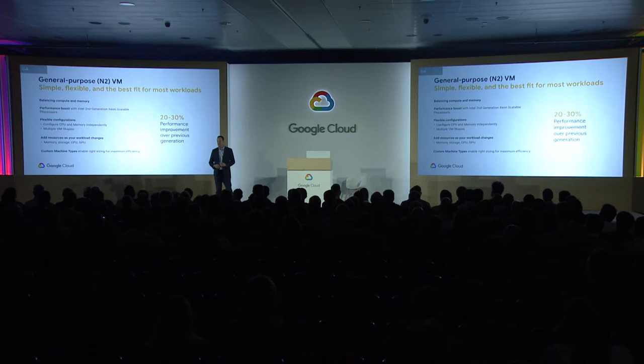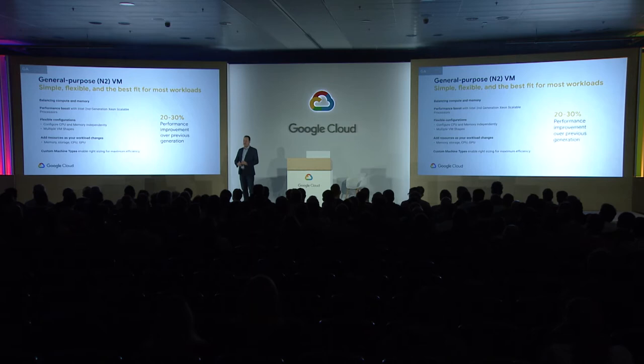This year we also introduced N2, which Patrick will talk about today. It is the next generation of our general-purpose family. N2 instances offer more flexible sizing and can go up to 80 vCPUs. They also run on Cascade Lake with a much higher base frequency than our N1 family. These also allow you to attach GPUs, memory, and storage, giving you the same flexibility as N1 but with better performance.